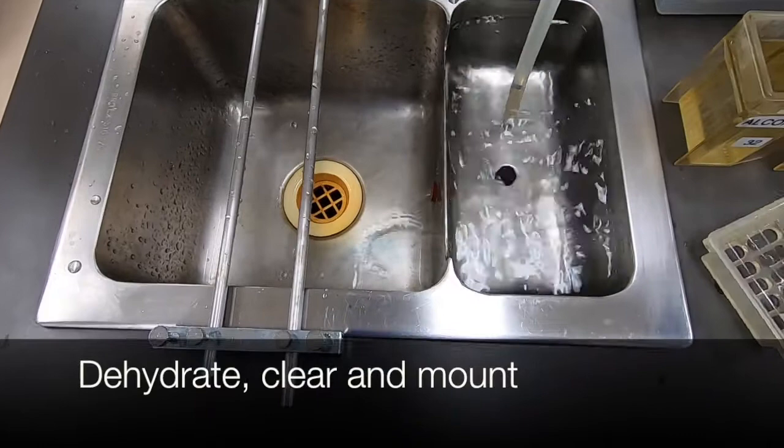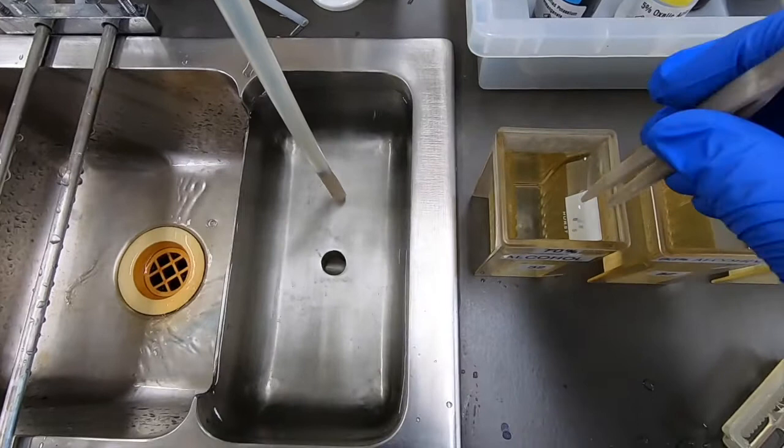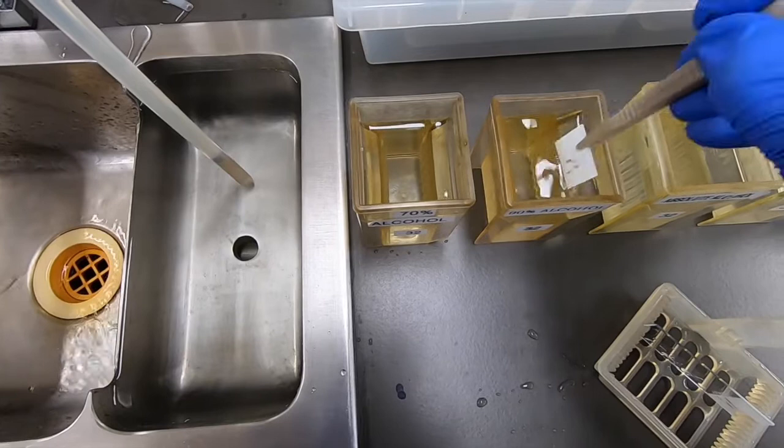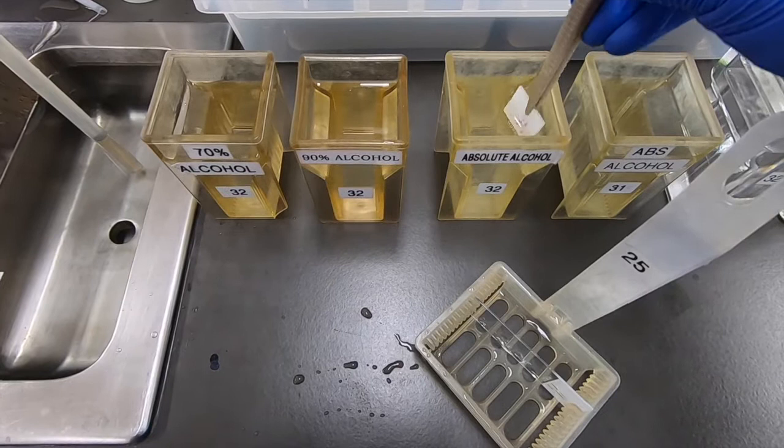Using this manual approach that we've got here with the Coplin jars, we begin in this case going straight to 70% alcohol because we're coming straight out of water. And I'm ensuring that both the slide as well as the forceps are well rinsed at each step. So it doesn't take particularly long but just important to pay attention to those rinsing steps. Opening up the forceps at each change to allow any liquid to drain down.